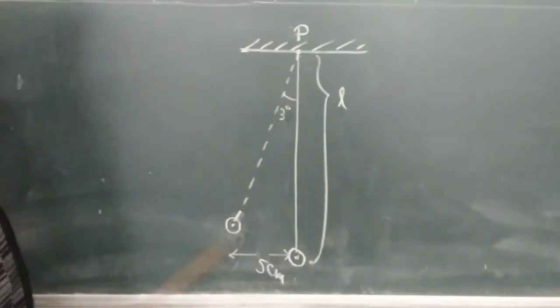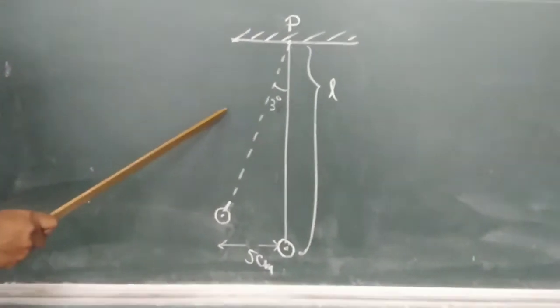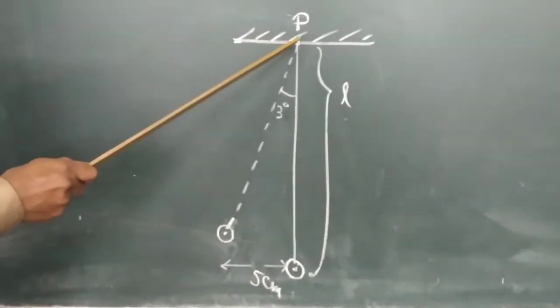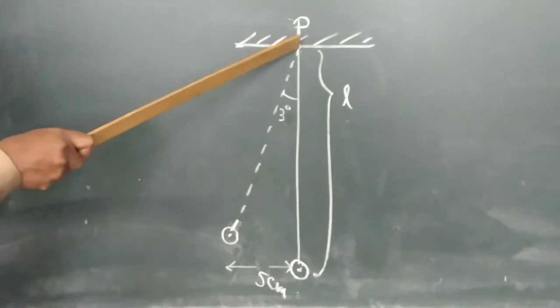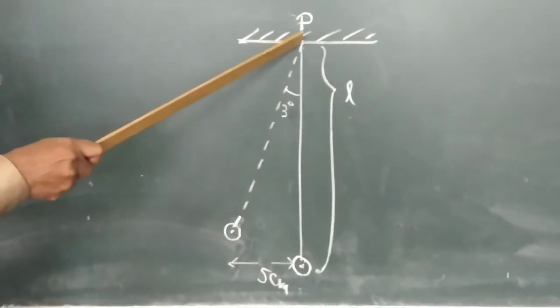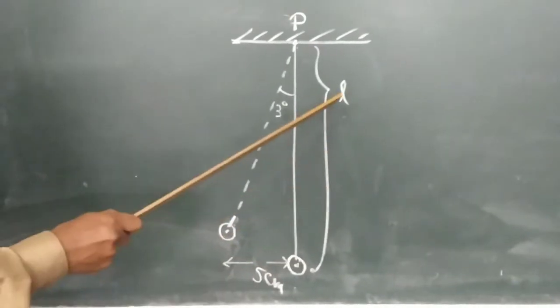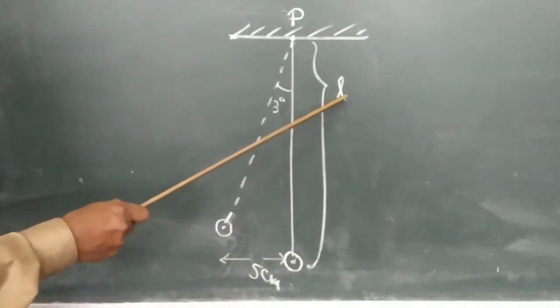So have a look at the diagram. If you look at the diagram here, P is the point of suspension. From this point of suspension till the mid of the bob is the so-called effective length L. So from here